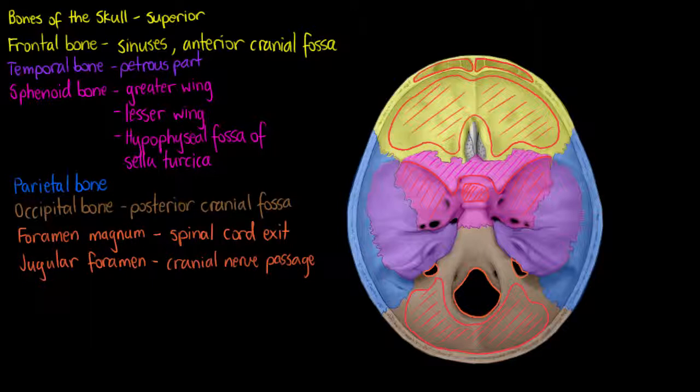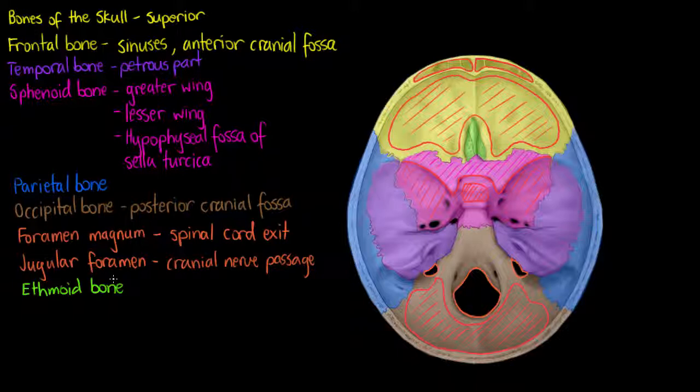The last bone that I'm going to highlight up on the screen here now in green is our ethmoid bone. Once again we'll speak about our ethmoid bone in the same way we're going to talk about the petrous section of our temporal bone when we start to talk more about our special senses, because the ethmoid bone plays a large role in the organs of our sense of smell.